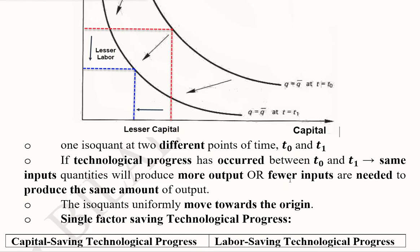And we then inverted the situation and we can say that fewer inputs now are required. As you can see in the diagram, the same level that is q bar can be produced with lesser of the capital and lesser of labor.